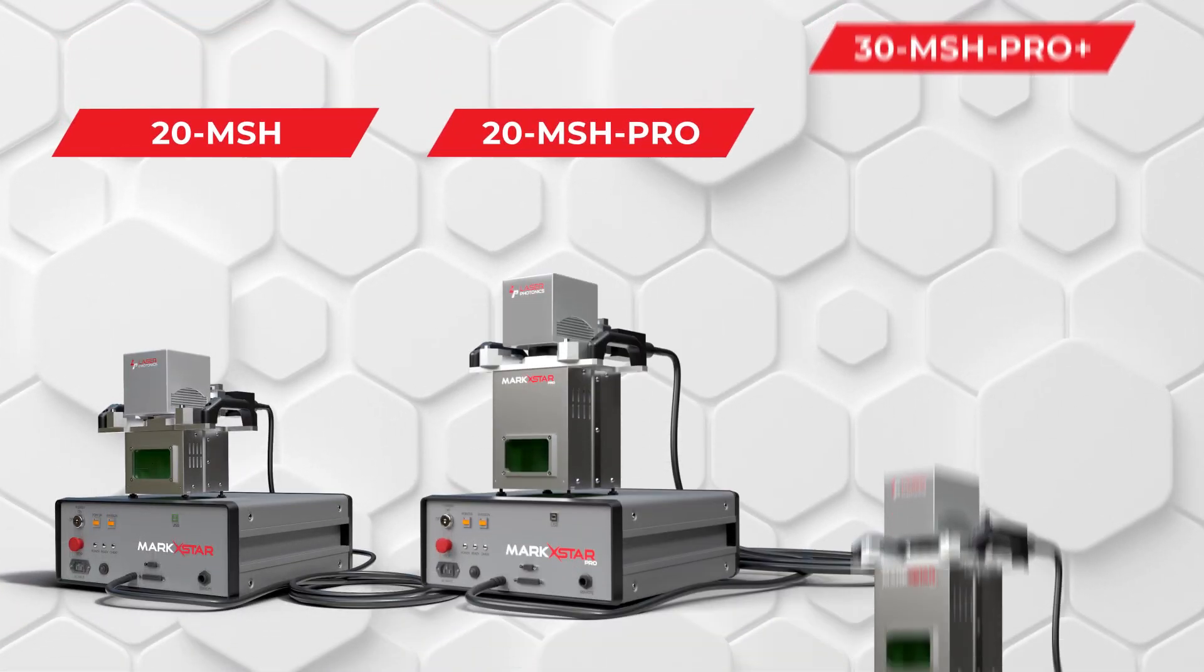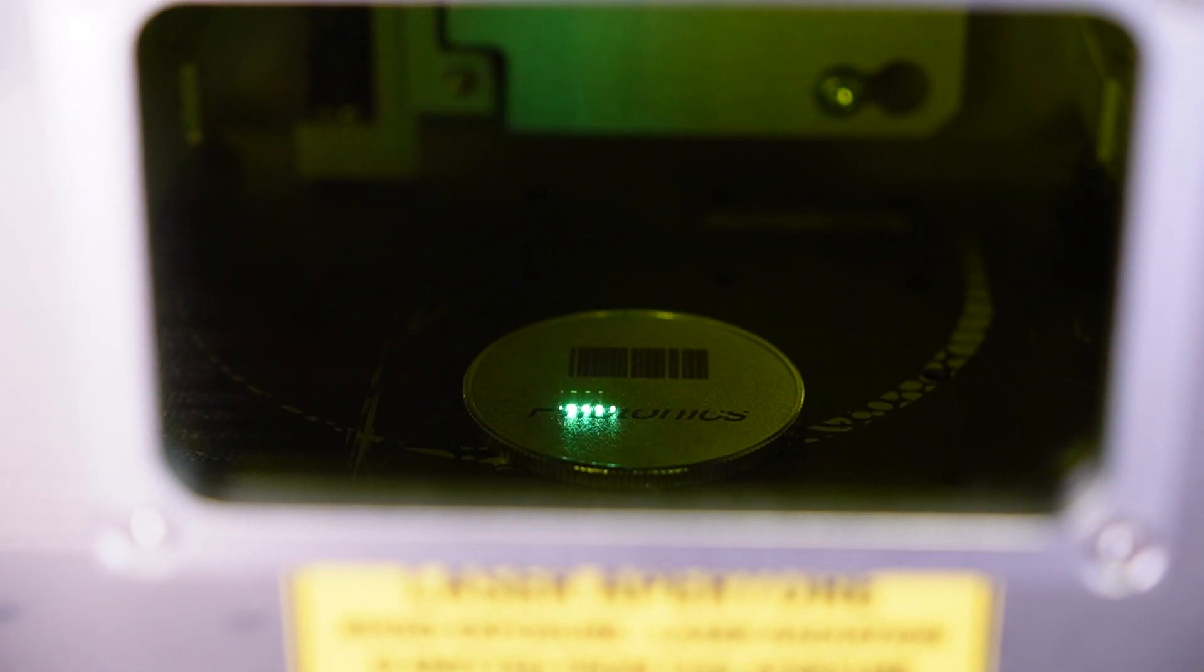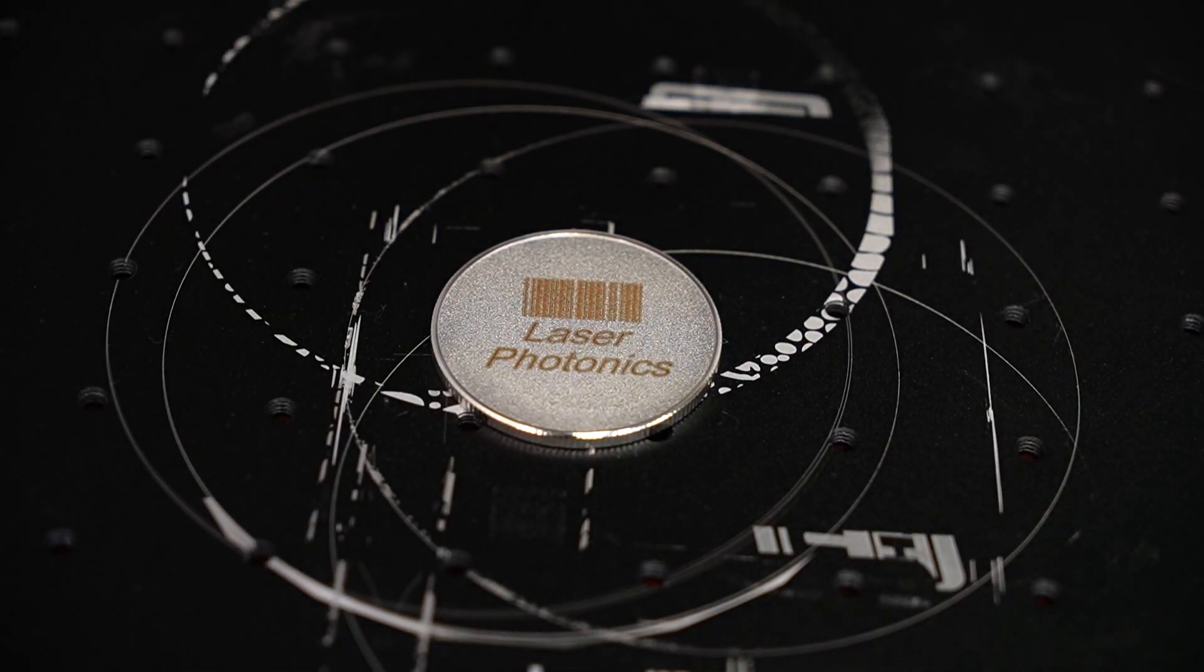The Markstar comes in three different variations. First, the base Markstar, which features a slightly smaller emitter chamber and allows for a maximum 2-inch by 2-inch marking area.